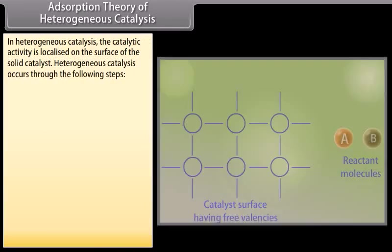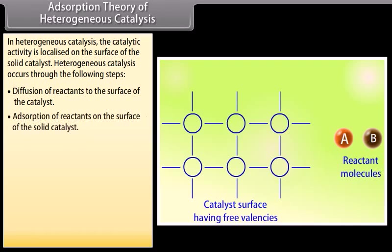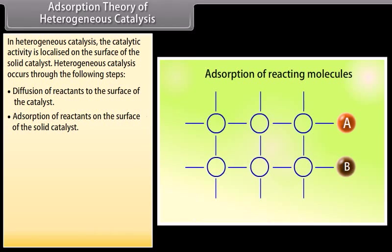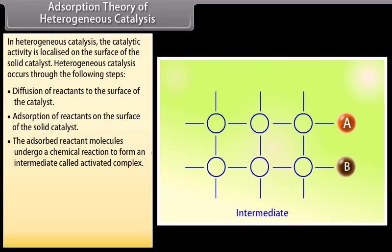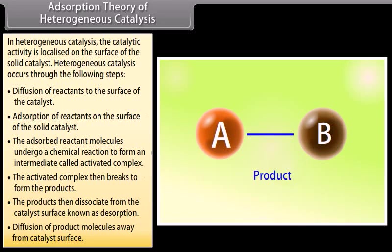Adsorption theory of heterogeneous catalysis: In heterogeneous catalysis, the catalytic activity is localized on the surface of the solid catalyst. The steps are: (1) diffusion of reactants to the catalyst surface; (2) adsorption of reactants on the solid catalyst surface; (3) adsorbed reactant molecules undergo a chemical reaction forming an intermediate called the activated complex; (4) the activated complex breaks to form products; (5) products dissociate from the catalyst surface (desorption); (6) diffusion of product molecules away from the catalyst surface.